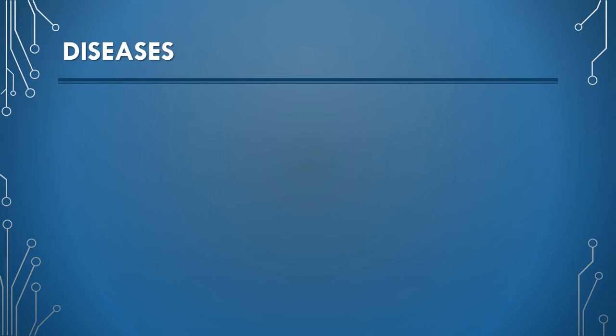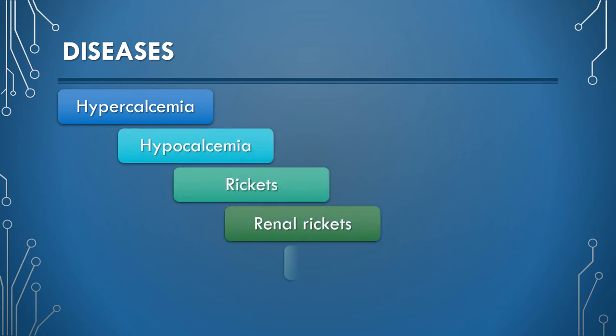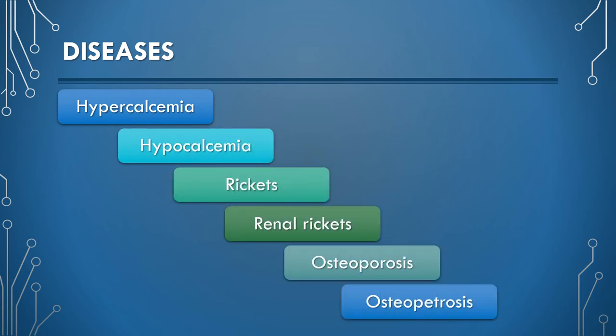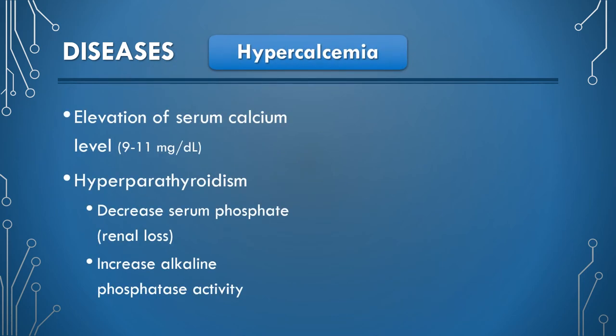The diseases of calcium include hypercalcemia, hypocalcemia, rickets, renal rickets, osteoporosis, and osteopetrosis. Elevation of serum calcium level above normal is recognized as hypercalcemia, and it is associated with hyperparathyroidism caused by increased activity of parathyroid glands. Decrease in serum phosphate and increase in alkaline phosphatase activity are also found in hyperparathyroidism.